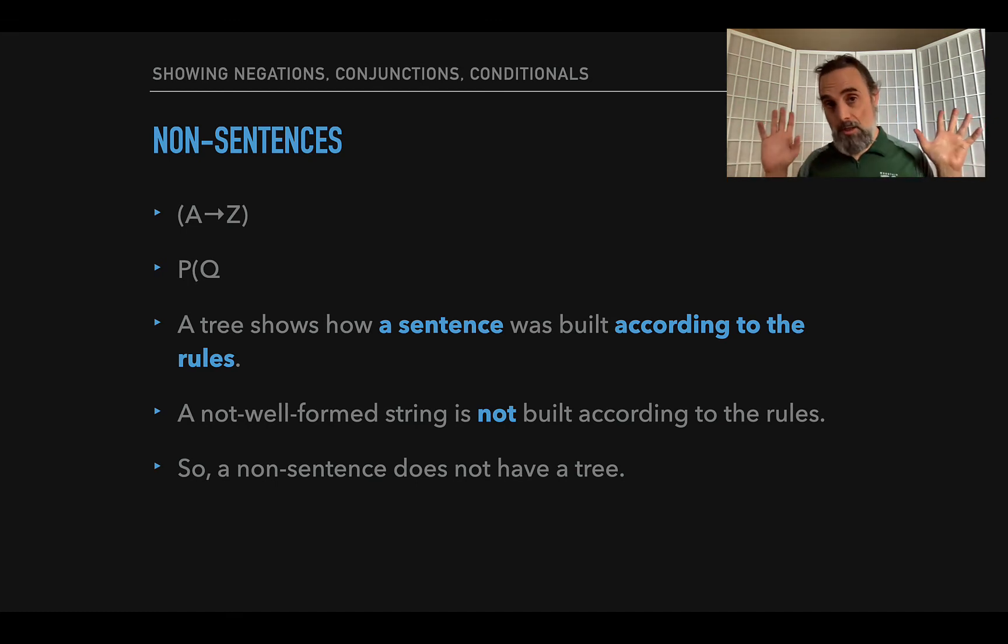So what you'll be doing in the parsing module, and there's a video with examples, but what you'll be doing is you'll be figuring out whether a sentence is in one of those three categories: official, informal, not well-formed. And if it's official or informal, then it has a parsing tree, and you will produce the parsing tree in the module. So, and you'll see that these homework problems are really, really easy, and so that's a nice, easy way to get points.